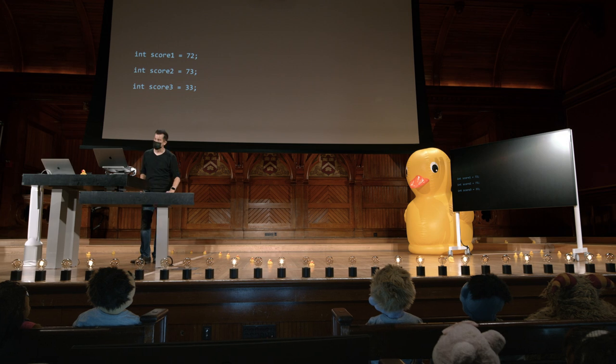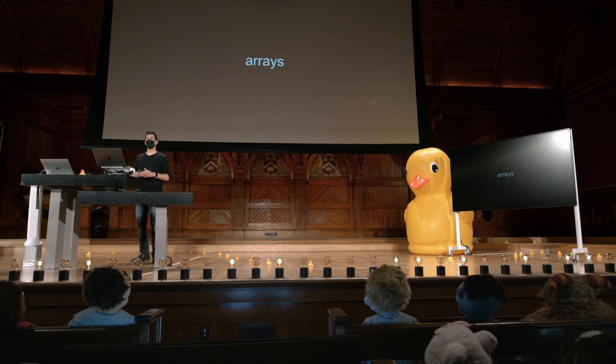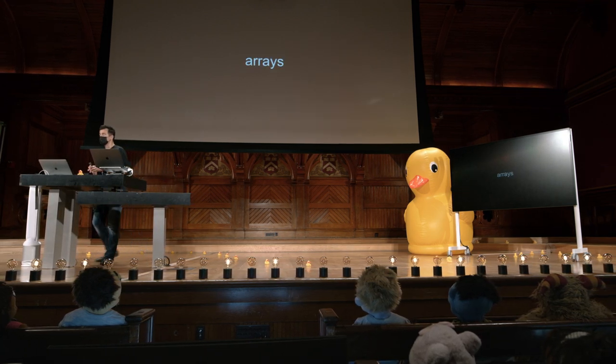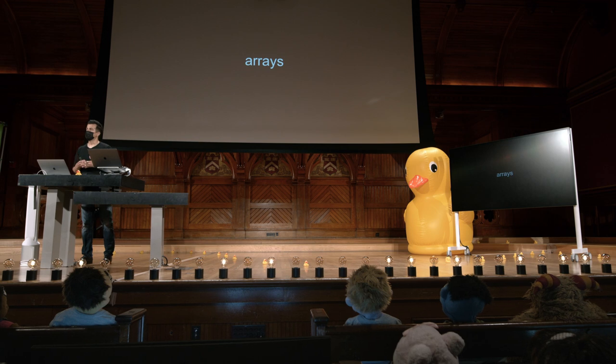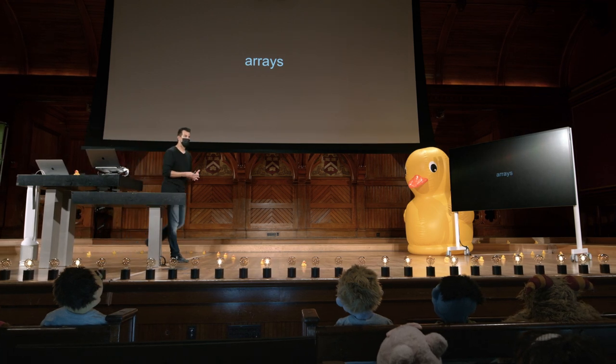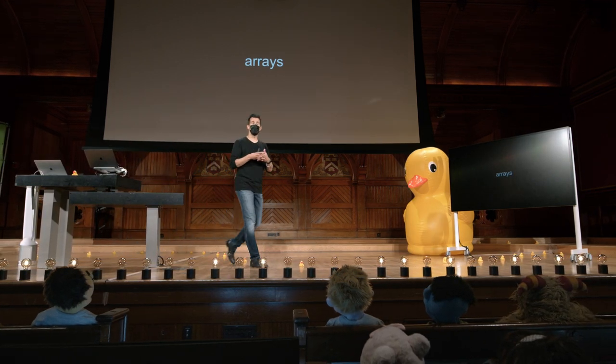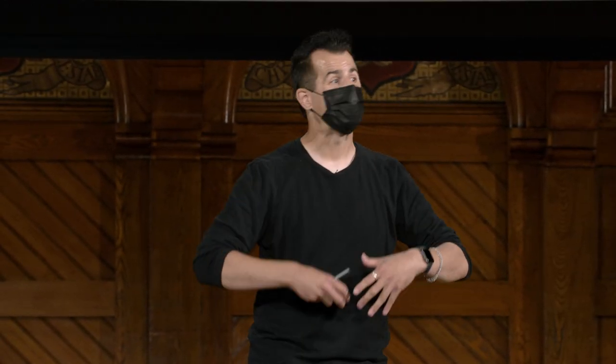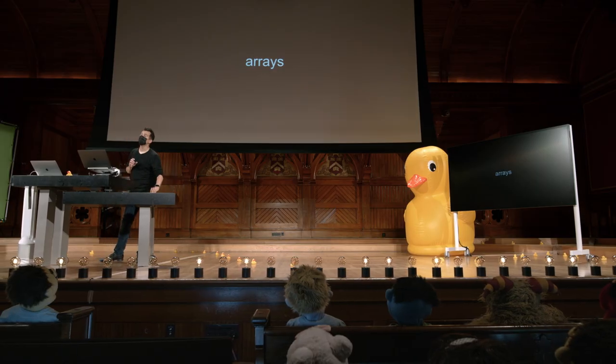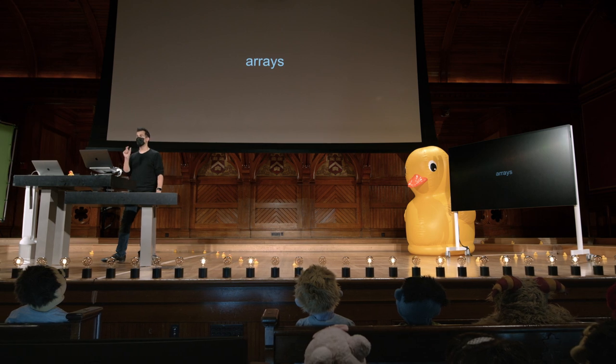A maneira de fazer isso é por meio de algo conhecido como um arranjo, ou uma array. Uma array é outro tipo de dados que permite armazenar vários valores do mesmo tipo em sequência, ou seja, de forma contígua. Assim, uma array pode permitir que você crie memória para um int, ou dois, ou três, ou até mais do que isso, mas descrevendo todos usando o mesmo nome de variável, o mesmo nome.